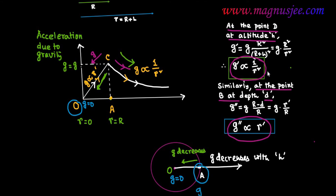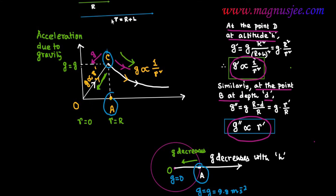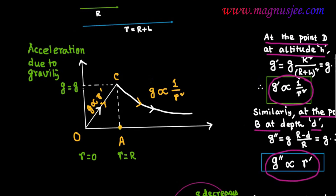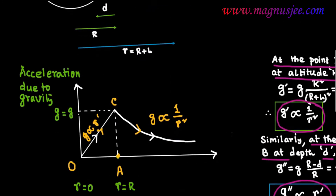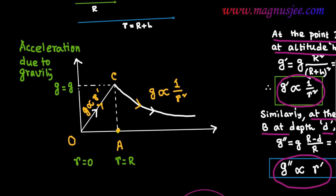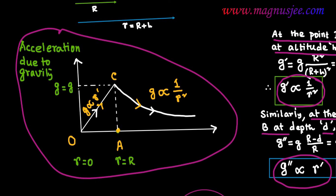At point A on earth surface — point C on the graph — g equals g, which is maximum: 9.8 meters per second squared. So this is the graph of acceleration due to gravity with distance — the graphical representation of acceleration due to gravity with distance from center of earth.